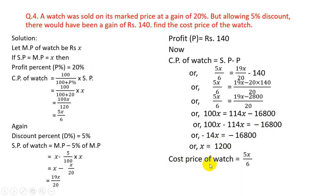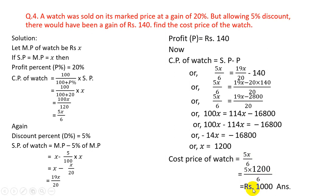Cost price of watch = 5X/6 = 5 × 1200/6 = Rs.1000 is the answer.